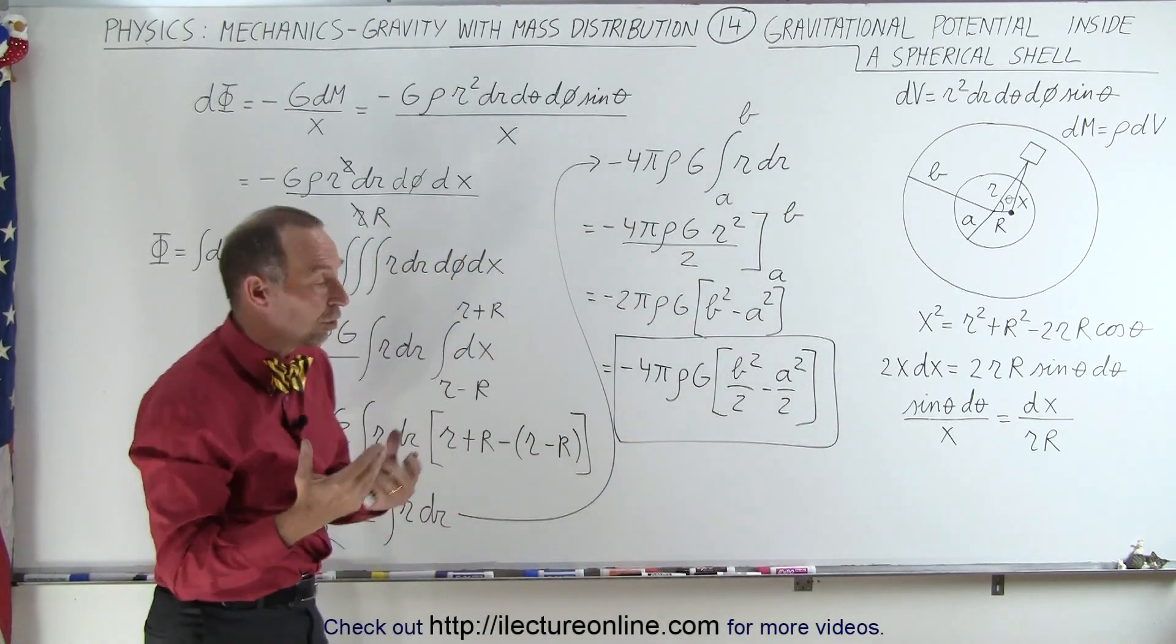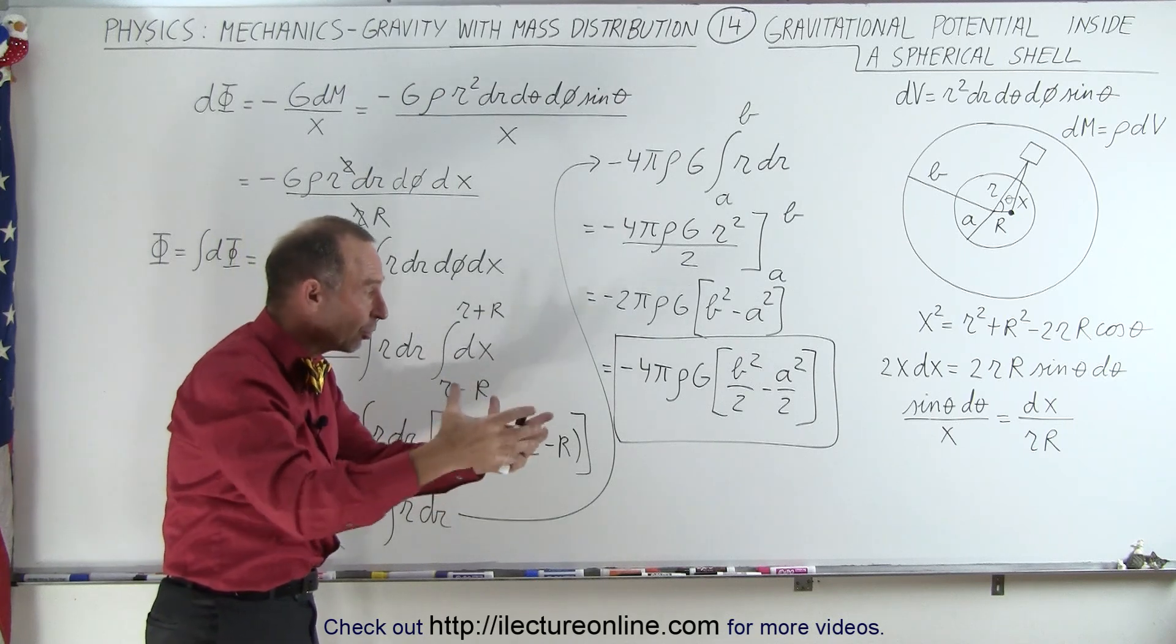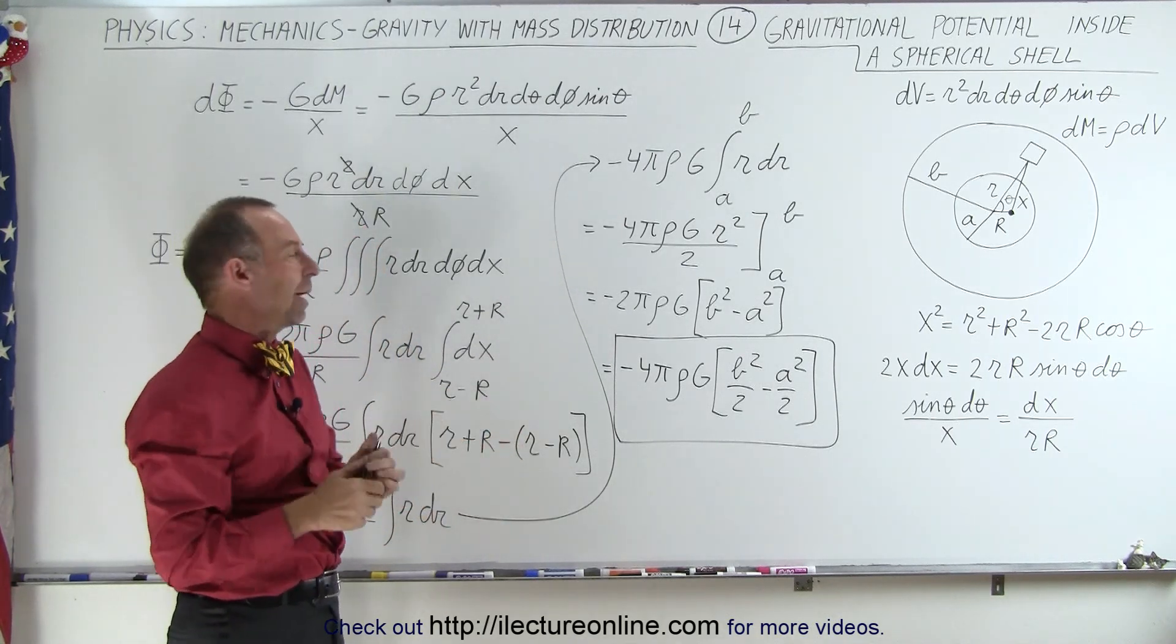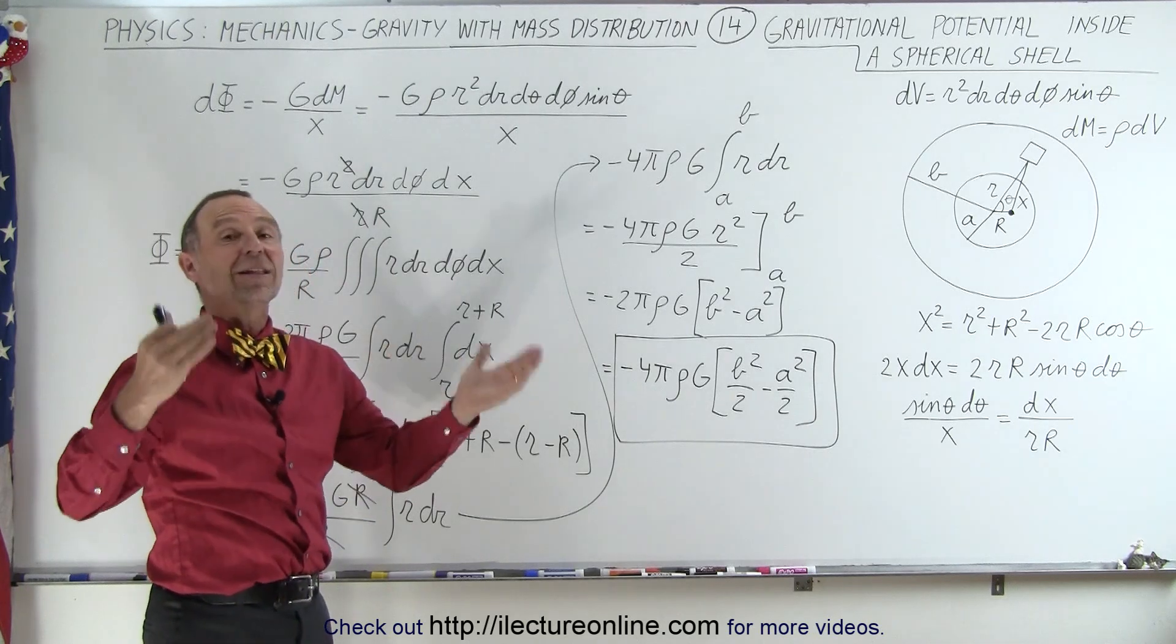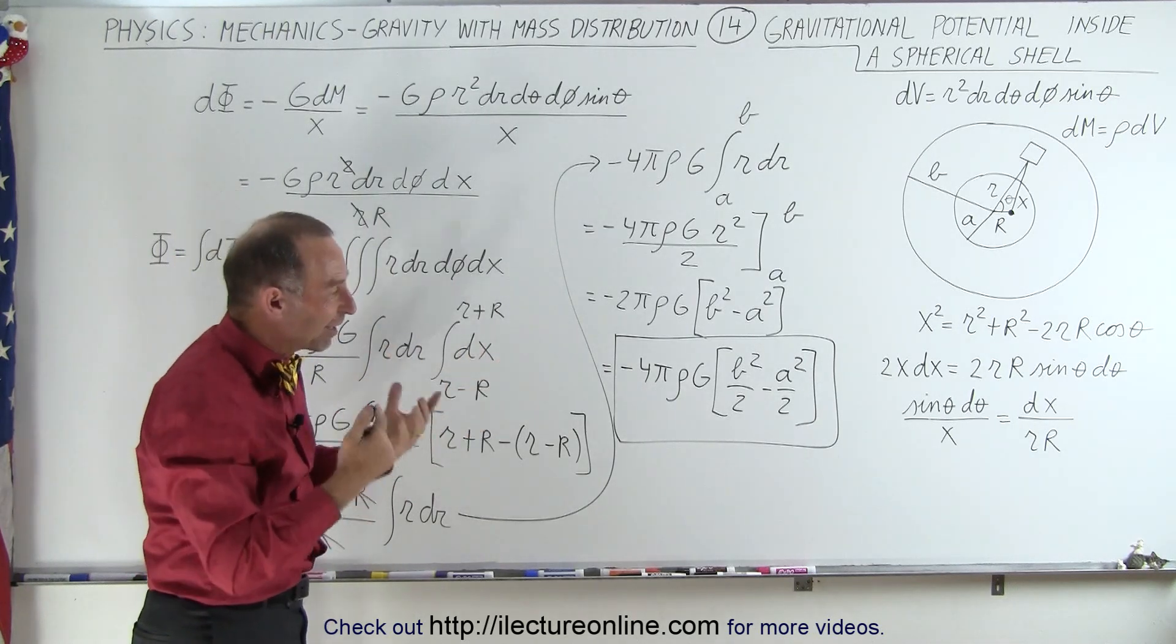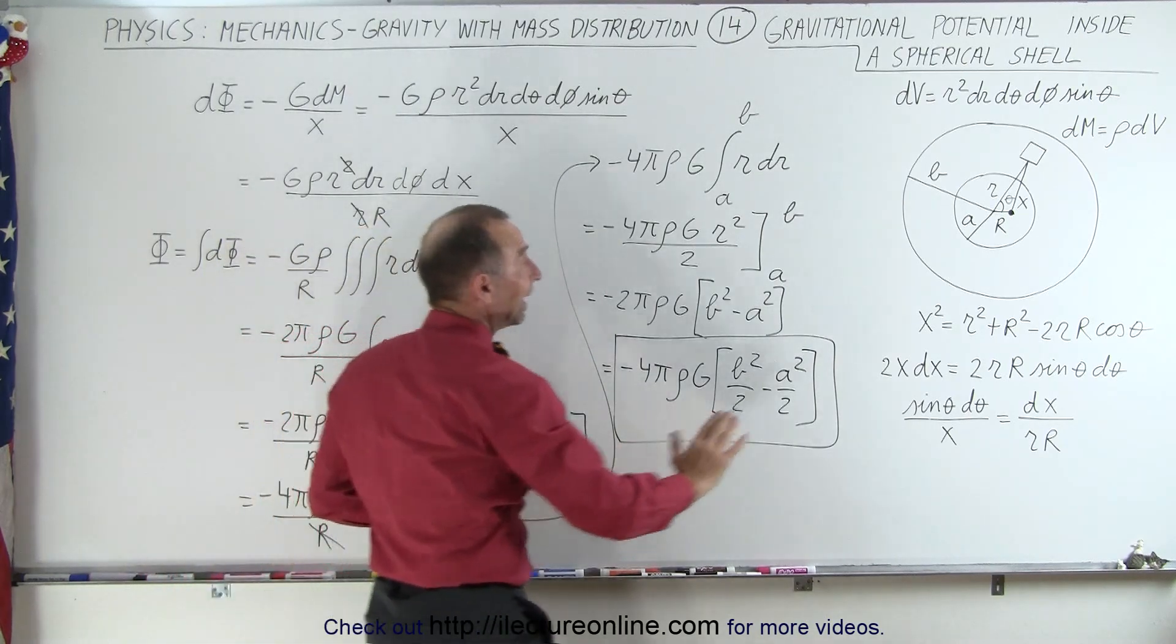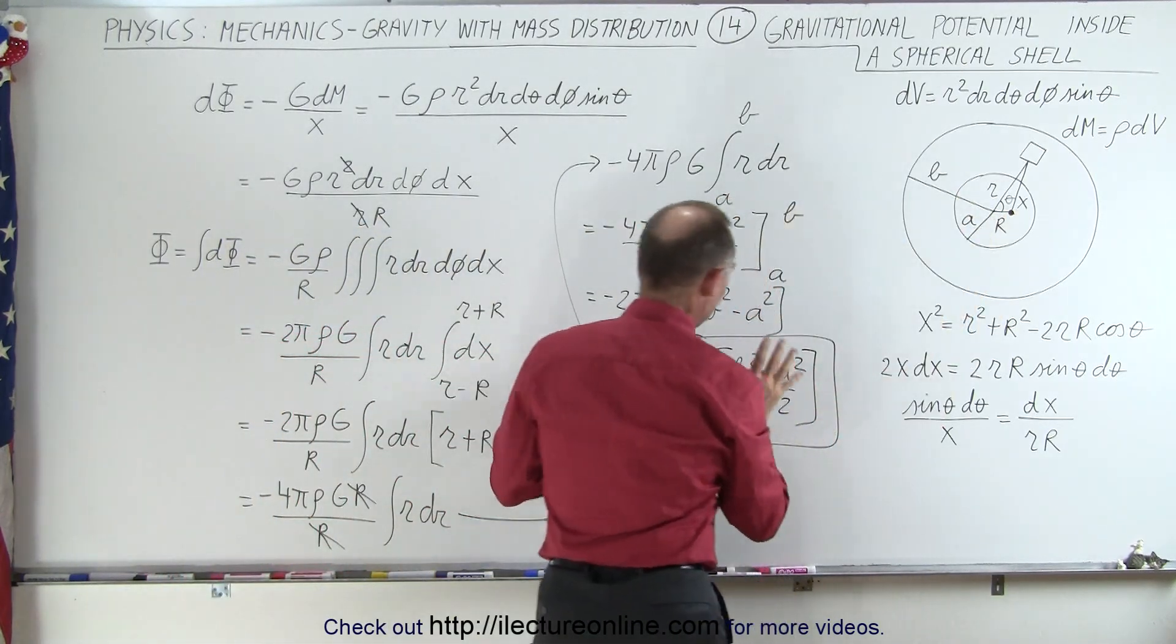All gravitational potentials end up being negative. As you get closer and closer to an object, the absolute value increases, but it's always a negative value. But what's interesting here is that inside the cavity, it's a constant.